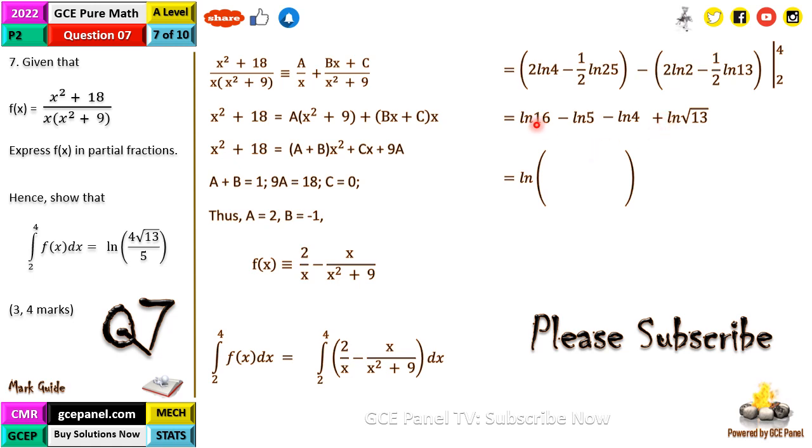When it simplifies we are going to have ln 16 times root 13 all that on 5 times 4, and this is going to give us ln 4 root 13 on 5 as required.